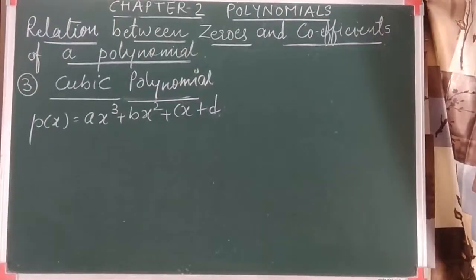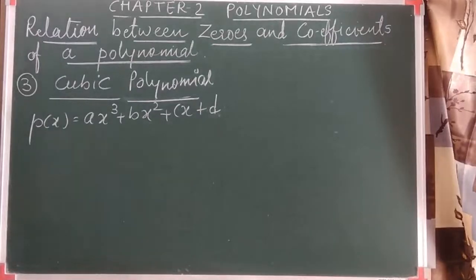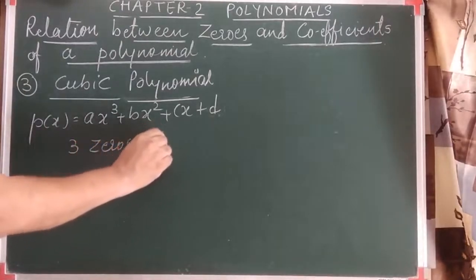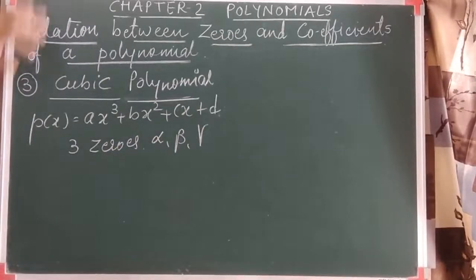Now let us see the last type — the cubic polynomial. The standard form is ax³ + bx² + cx + d. A linear polynomial has one zero, a quadratic polynomial has at most two zeros — there are some quadratic polynomials which have no zeros, which we will discuss later. A cubic polynomial has three zeros, which we denote as alpha, beta, and gamma.